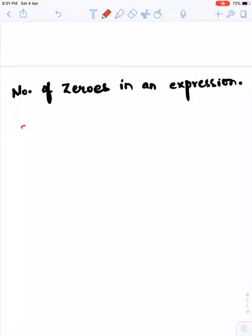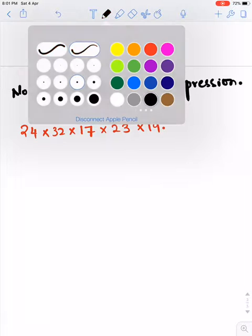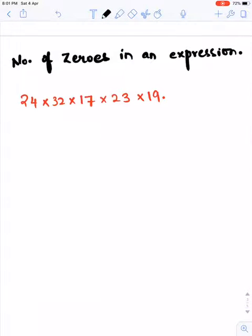The equation is 24 × 32 × 17 × 23 × 19. This can be written as 2³ × 3 × 2⁵ × 17 × 23 × 19.